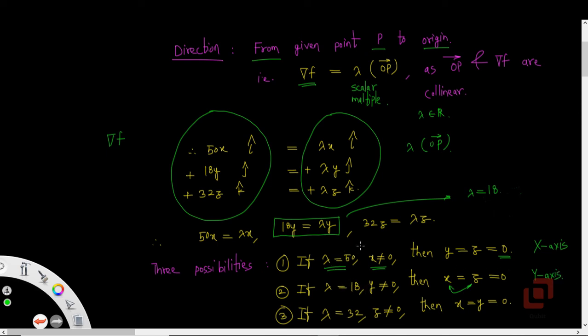And finally, if we consider the third equation which is 32z = λz, which gives us λ = 32, and for λ to be 32, x and y should be 0. So the third direction is the z-axis.